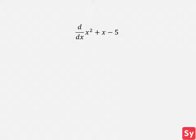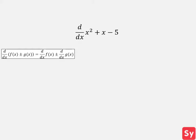For the last example, we want to compute the derivative of x squared plus x minus 5. We first use the sum difference rule, but this time for three functions. So this equals the derivative of x squared plus the derivative of x minus the derivative of 5. We will first compute the derivative of x squared using the power rule. This equals 2x.